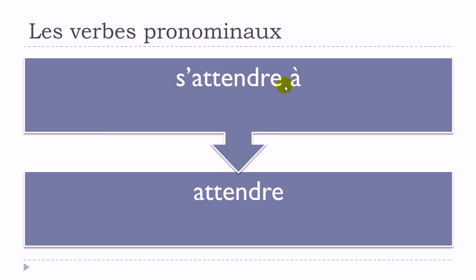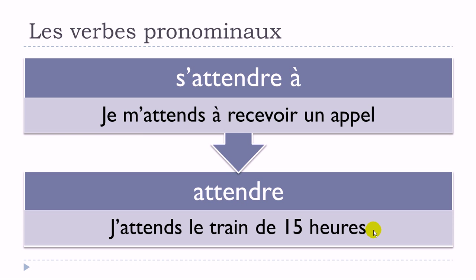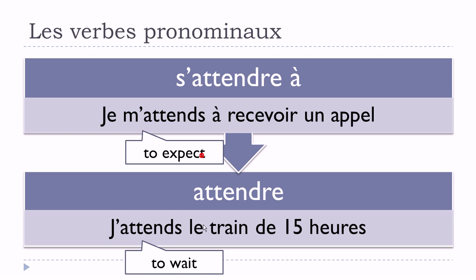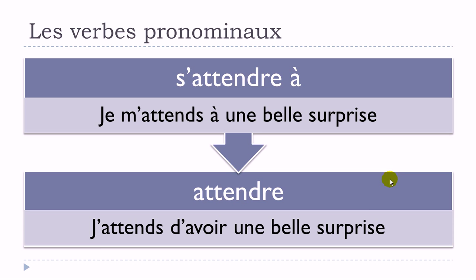For example: je m'attends à recevoir un appel — I expect to receive a call. And then: j'attends le train de quinze heures — I'm waiting for the 3 o'clock train. Another example: je m'attends à une belle surprise, or using the non-pronominal form: j'attends d'avoir une belle surprise. It's possible to express almost the same idea without using la forme pronominale.